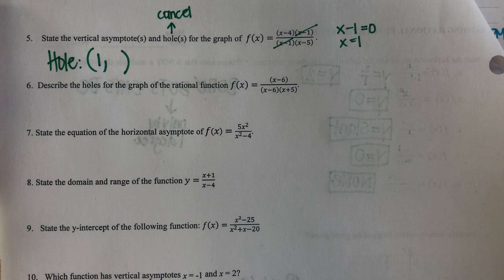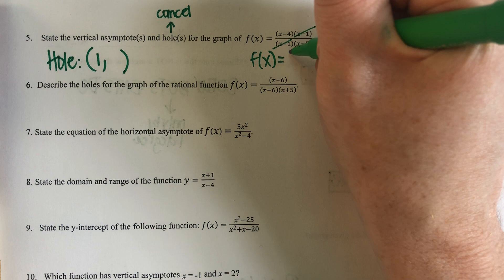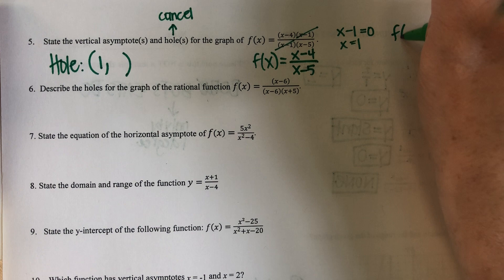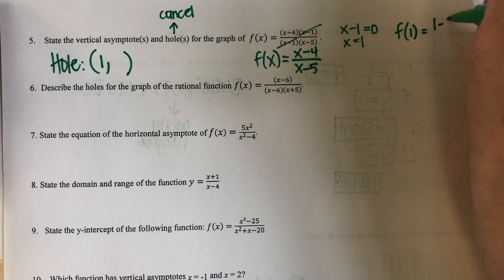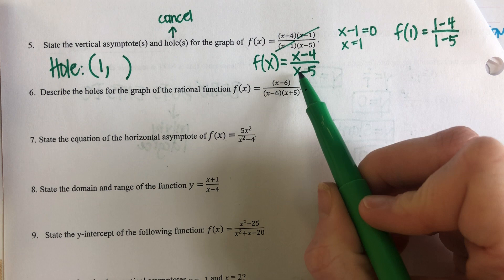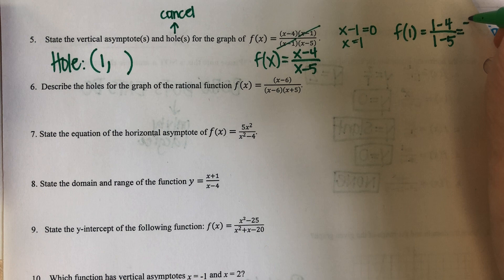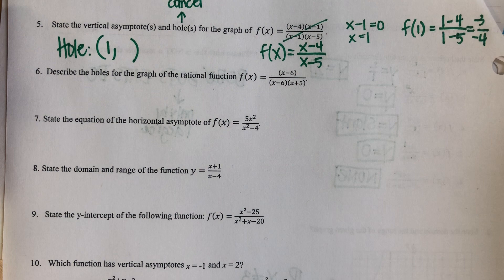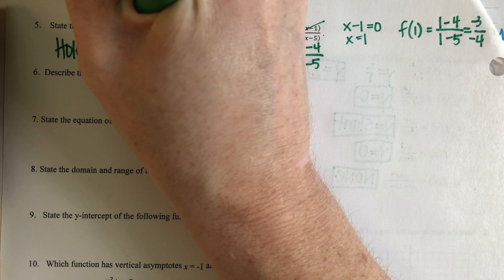My leftover function is X minus four over X minus five. So I'm going to take that X value and plug it back into my function: one minus four over one minus five. One minus four is negative three, and one minus five is negative four. Negative three divided by negative four is positive three fourths. So that is the Y value of the hole.